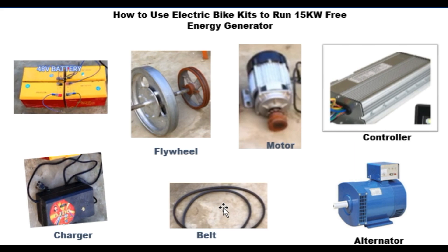We also have the batteries — small batteries of about 48 volts. Why do we have the battery? The batteries are what you use to provide the initial power supply to kick-start the generator, so the batteries are very important. You also have the charger that helps to charge the batteries, because when the battery is depleted and you want to run the system, you must have the charger which helps charge the batteries and keep them in a chargeable state.